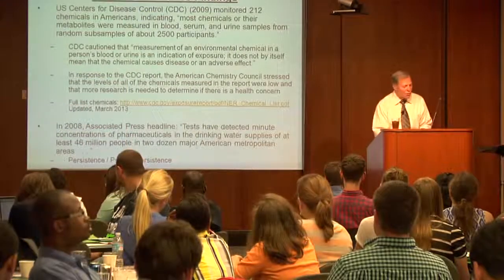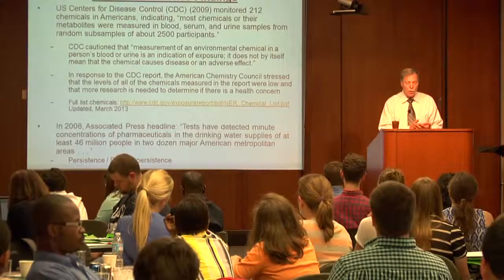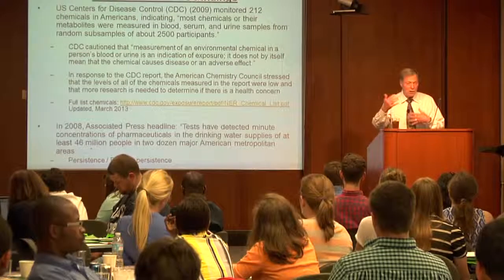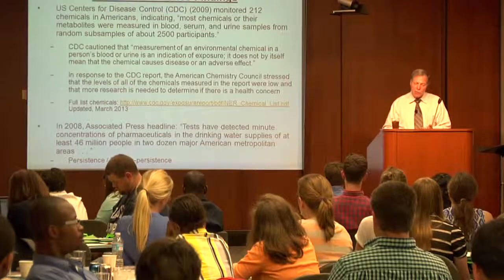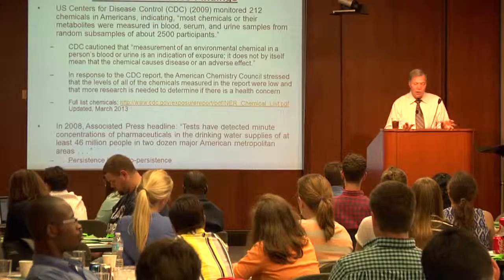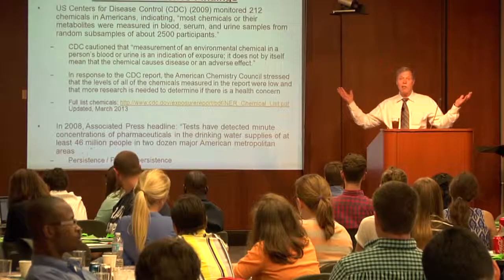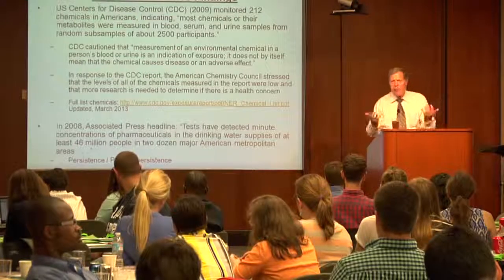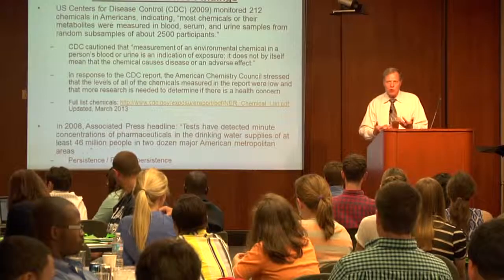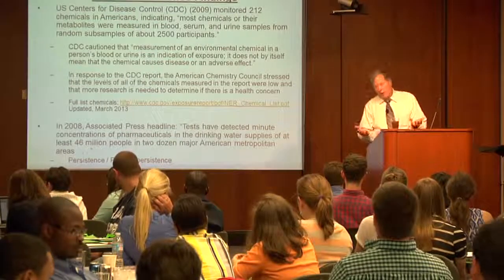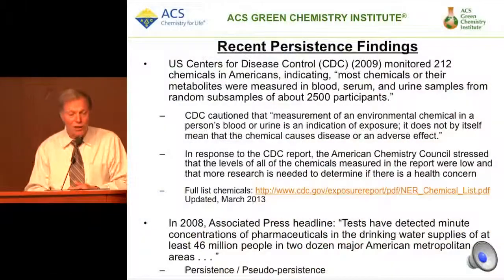Some of these may surprise you. The U.S. Centers for Disease Control took a look at 212 chemicals in Americans — that's you and I and the other folks walking around on the street. They looked at chemicals and their metabolites and found most of them in the blood, serum, and urine samples from about 2,500 individuals. I'm very much a risk-based person, but if somebody said were you okay with your kids having this burden of chemicals, you get a little squeamish about that.